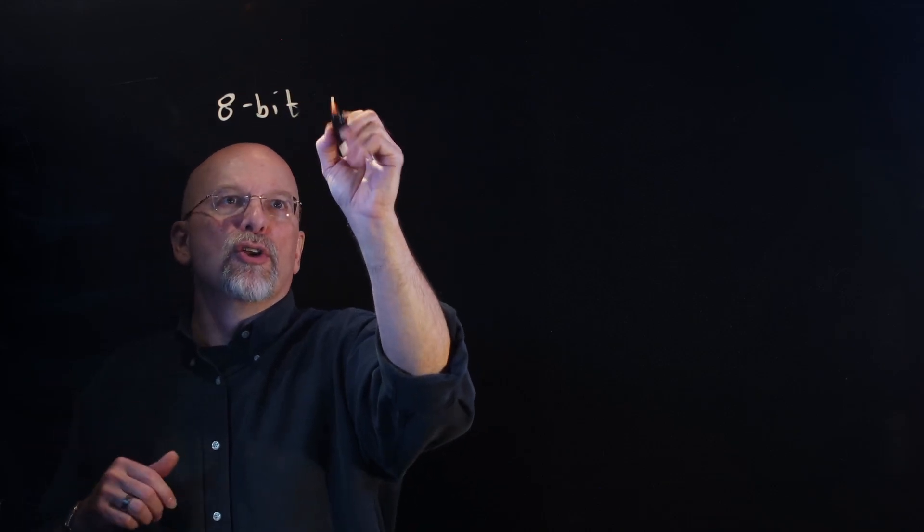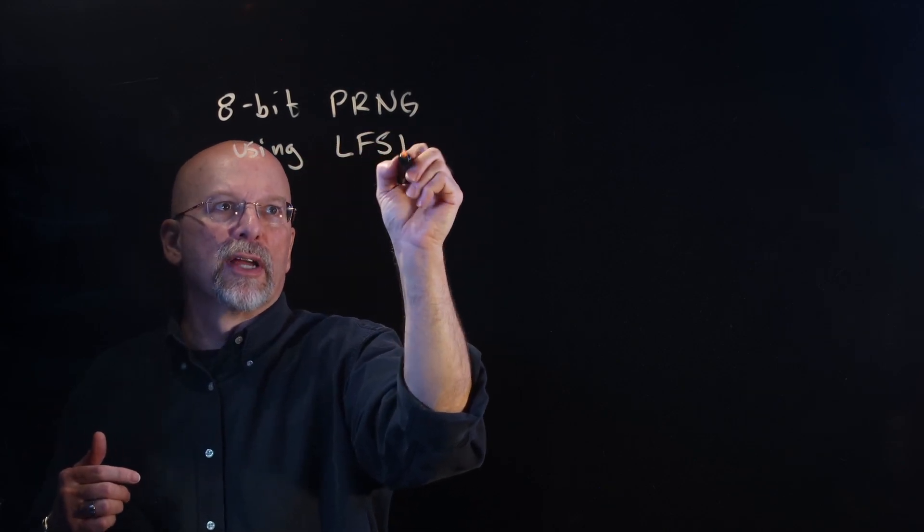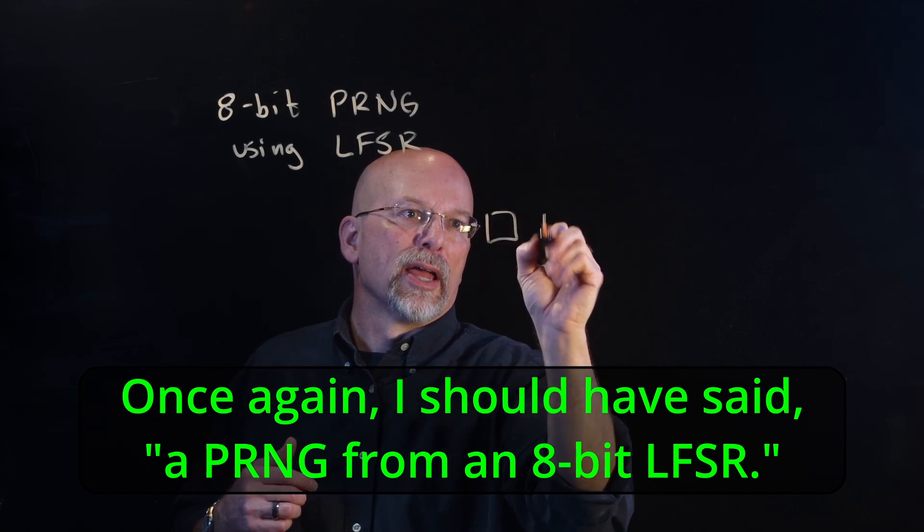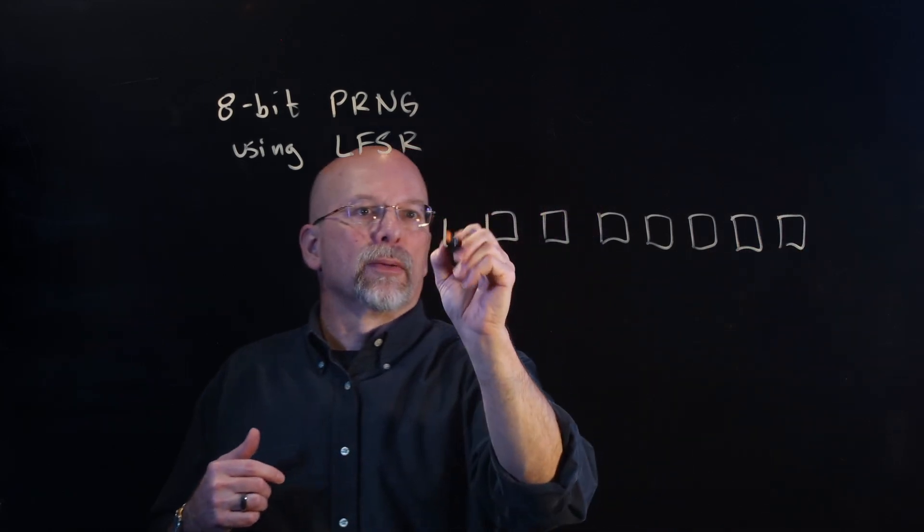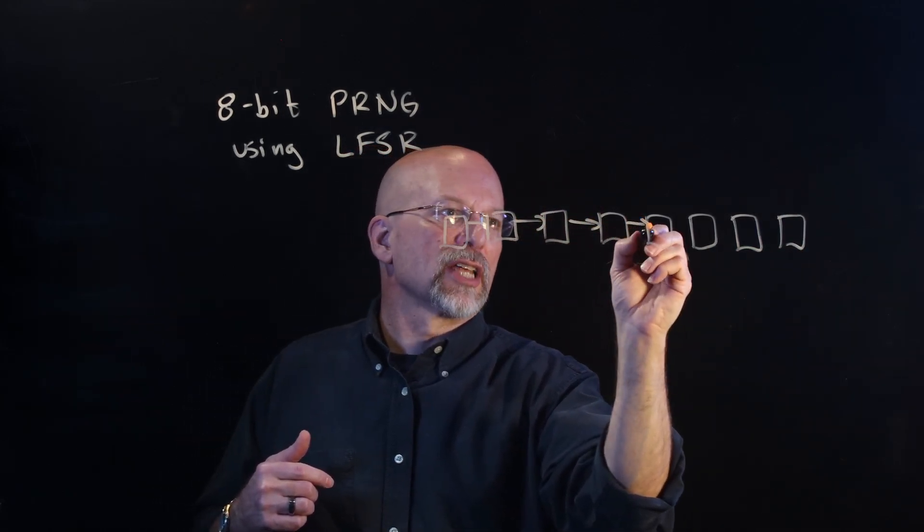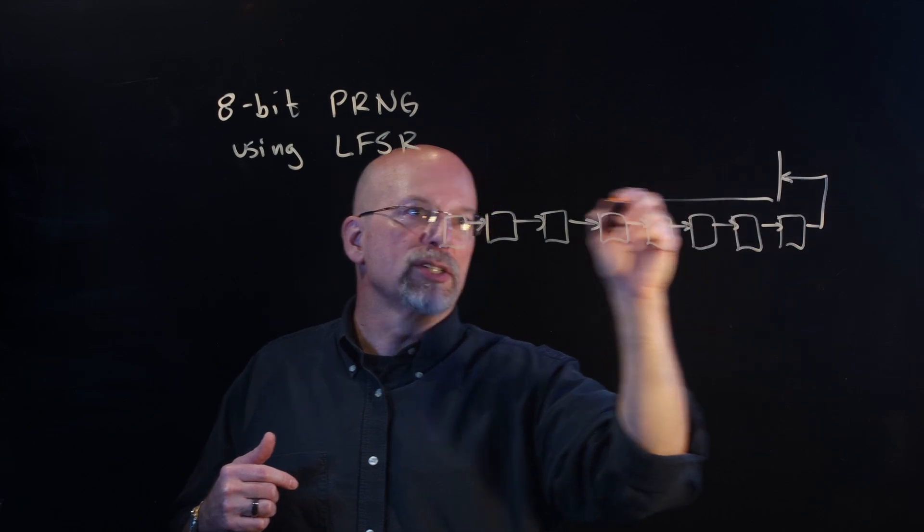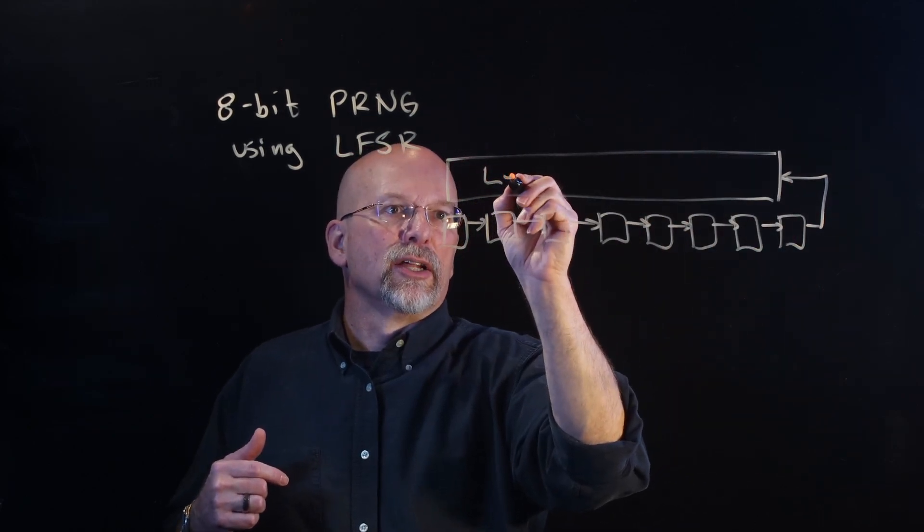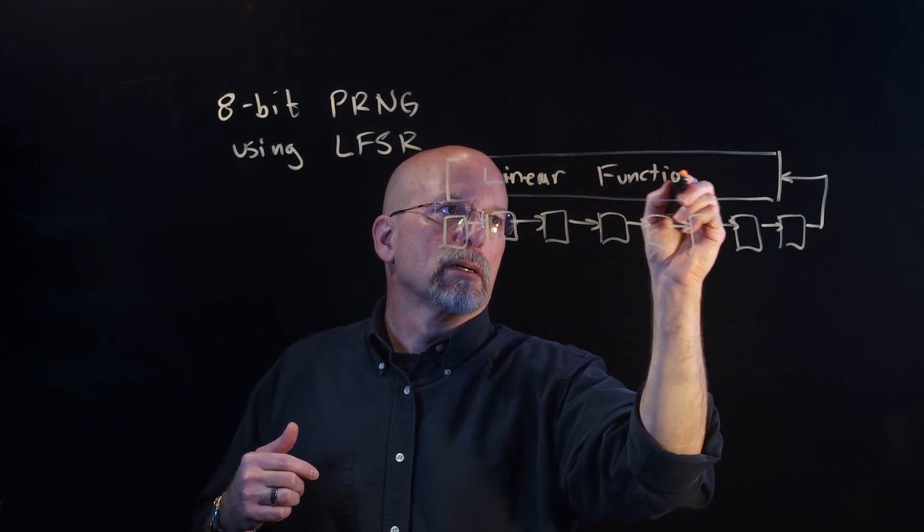15 bits, not very long. Won't take very long to get through all those bits before we have to loop around. What if we went a little bit longer? What if we used an 8-bit pseudo-random number generator using a linear feedback shift register? We have the 8 bits. It is just a shift register shifting in, coming around. Remember, the least significant bit is always included as part of our linear function.